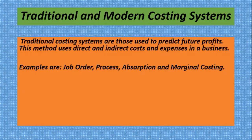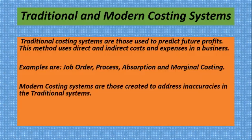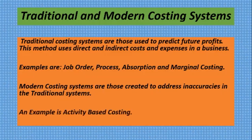Modern costing systems are those created to address the inaccuracies in the traditional costing system. The reason they are called modern is because they were developed to upgrade traditional systems and eliminate any inaccuracies. An example is activity-based costing. There are others, but activity-based costing is the only modern system we will be looking at.